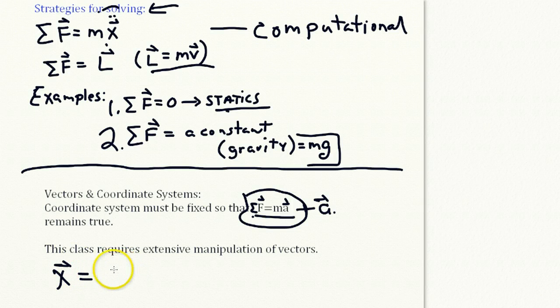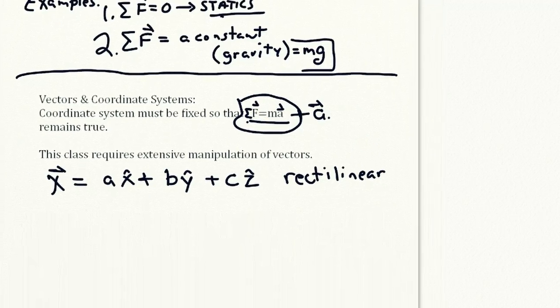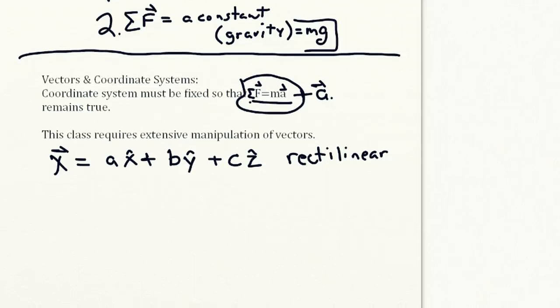x is the position vector, and that could equal some scalar A in the x-hat direction, plus another scalar, we're going to call that B in the y-hat direction, plus a third scalar, we'll call that C in the z-hat direction. So this is the rectilinear coordinate system.